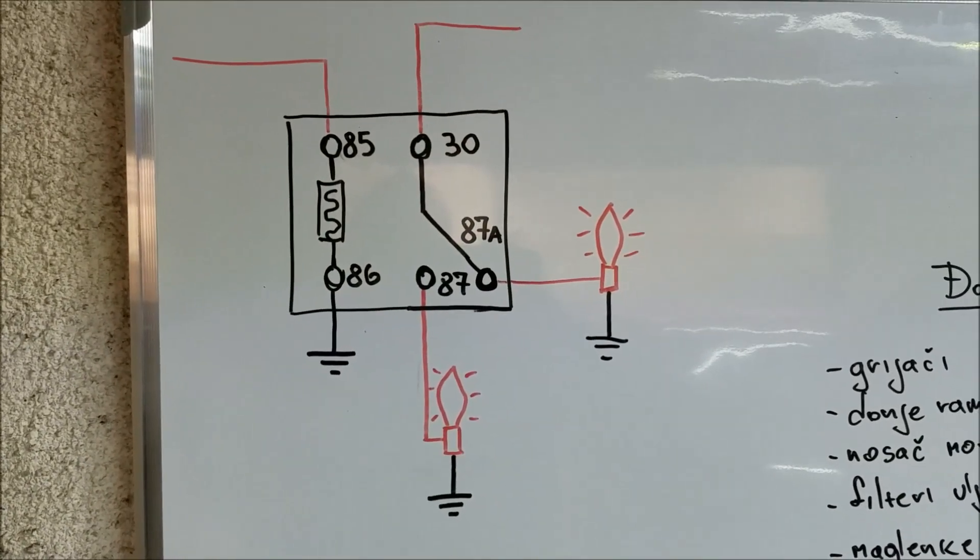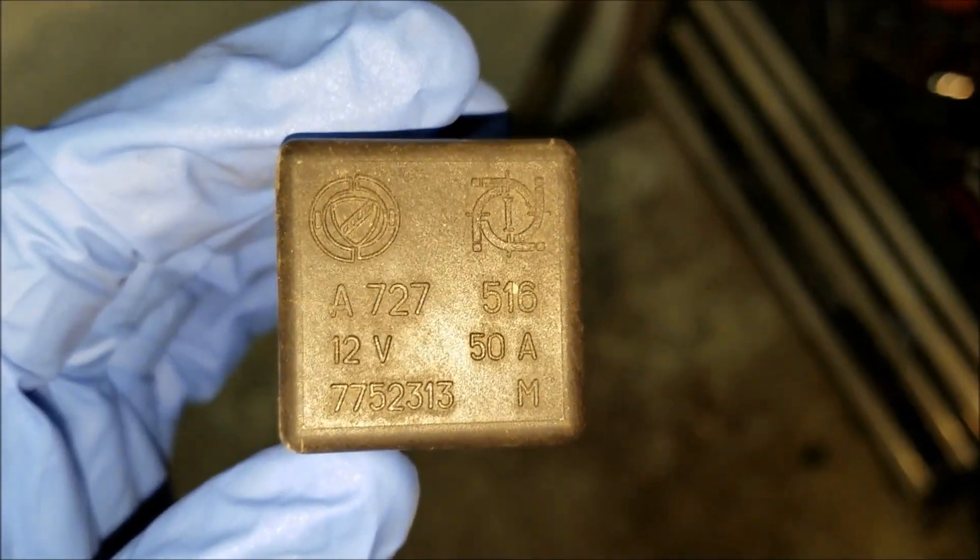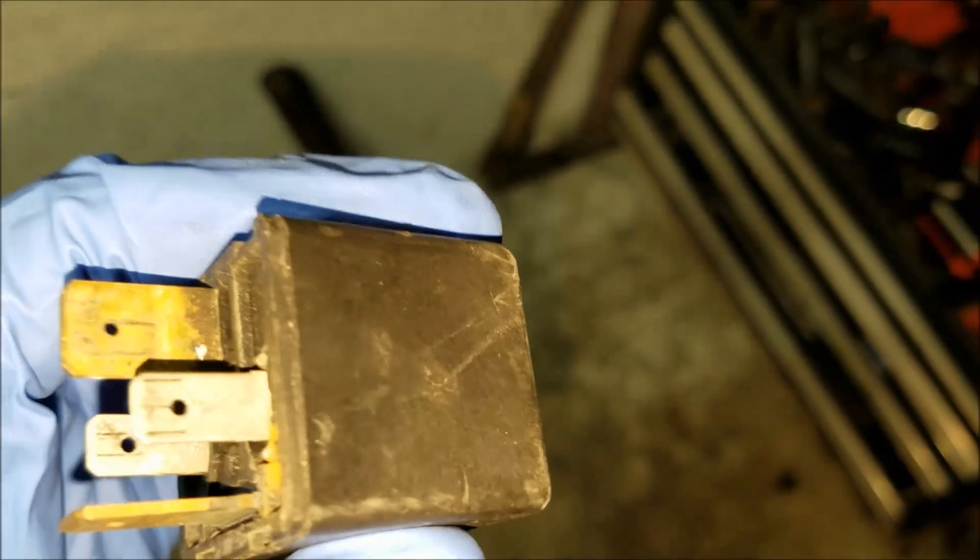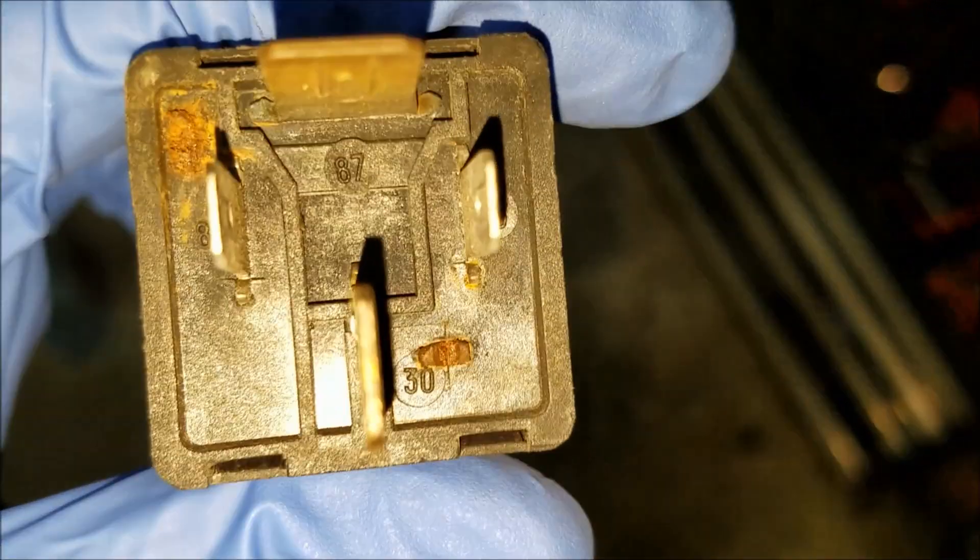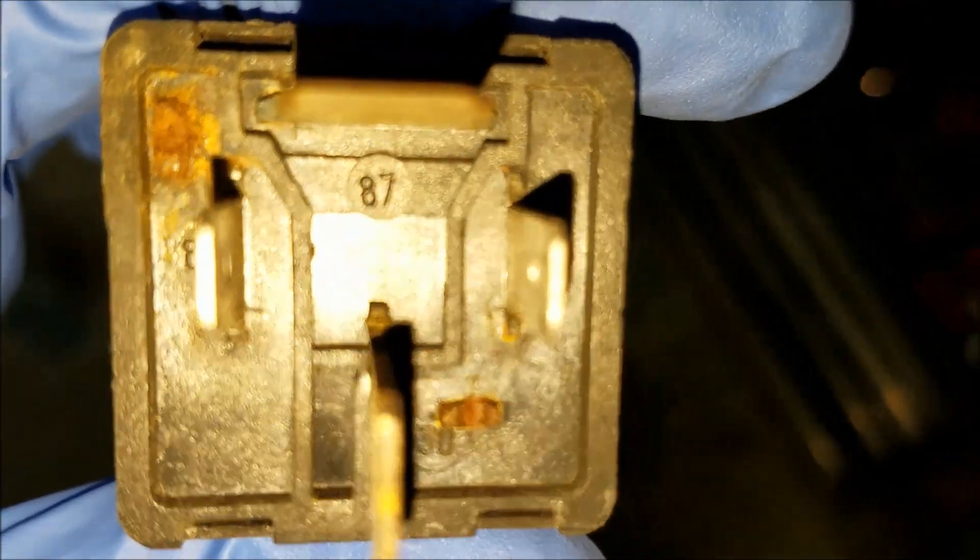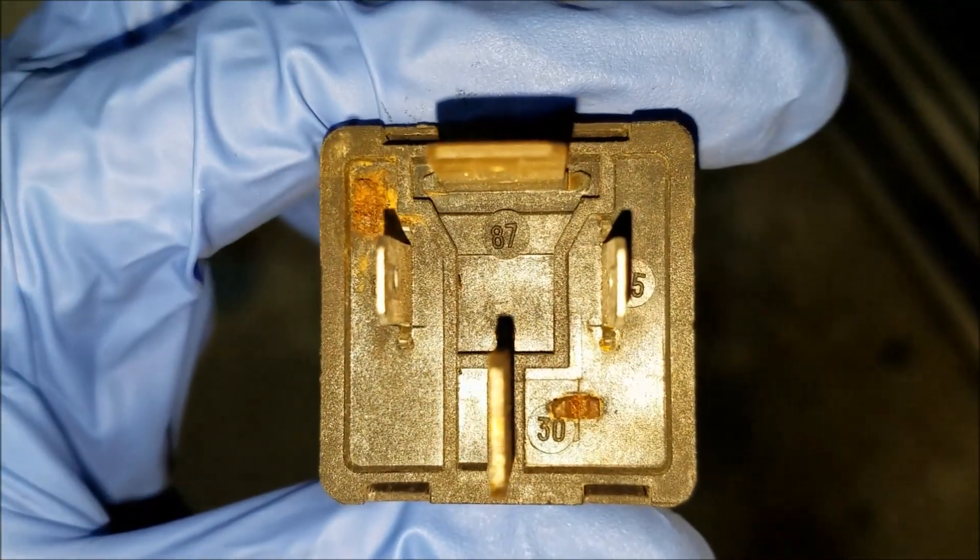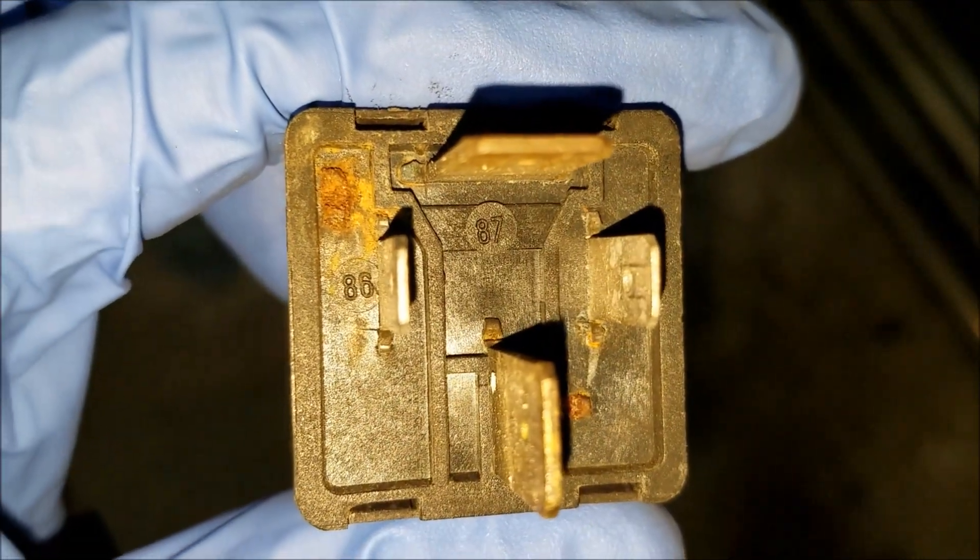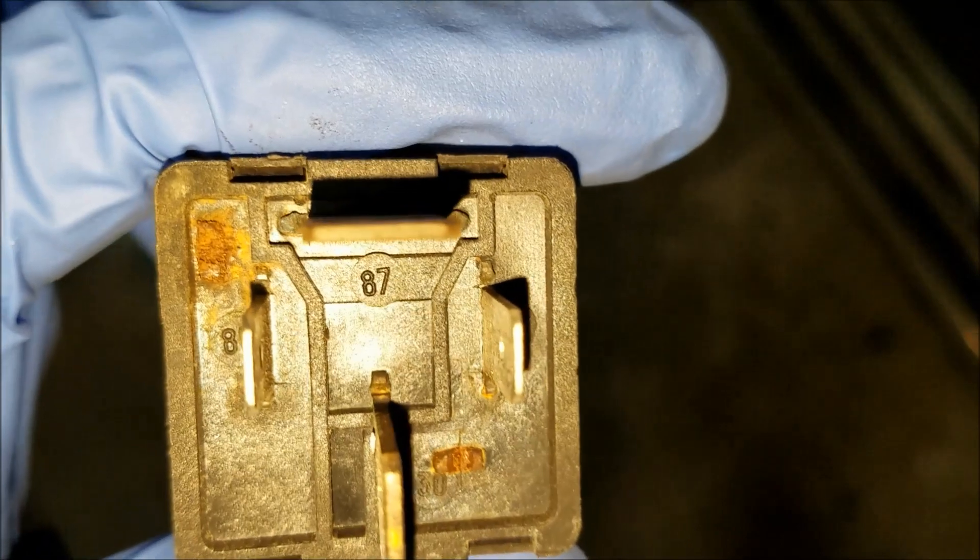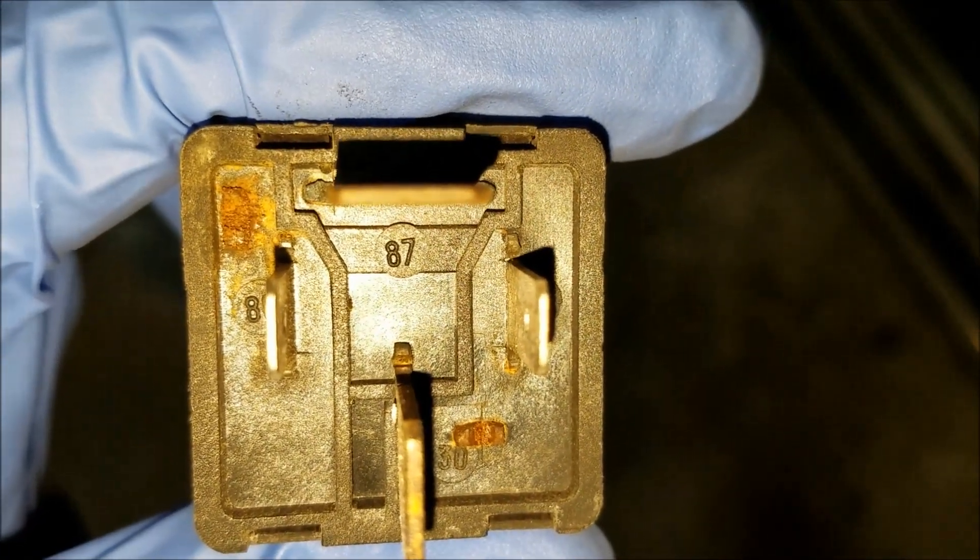As you can see right here, we got a 50 amp four pin relay which was probably used to power a component like a radiator fan or something like that. And besides each pin there is a number, and since we just explained what each of them does, we're going to go ahead and start with our test.